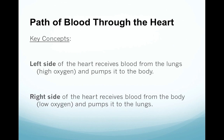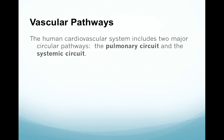Two key concepts about blood flow through the heart: the left side of the heart receives blood from the lungs — so it's highly oxygenated — and then pumps it to the body, whereas the right side of the heart receives blood from the body — which means it's low in oxygen — and then pumps it to the lungs. The human cardiovascular system includes two major circular pathways: the pulmonary circuit and the systemic circuit.